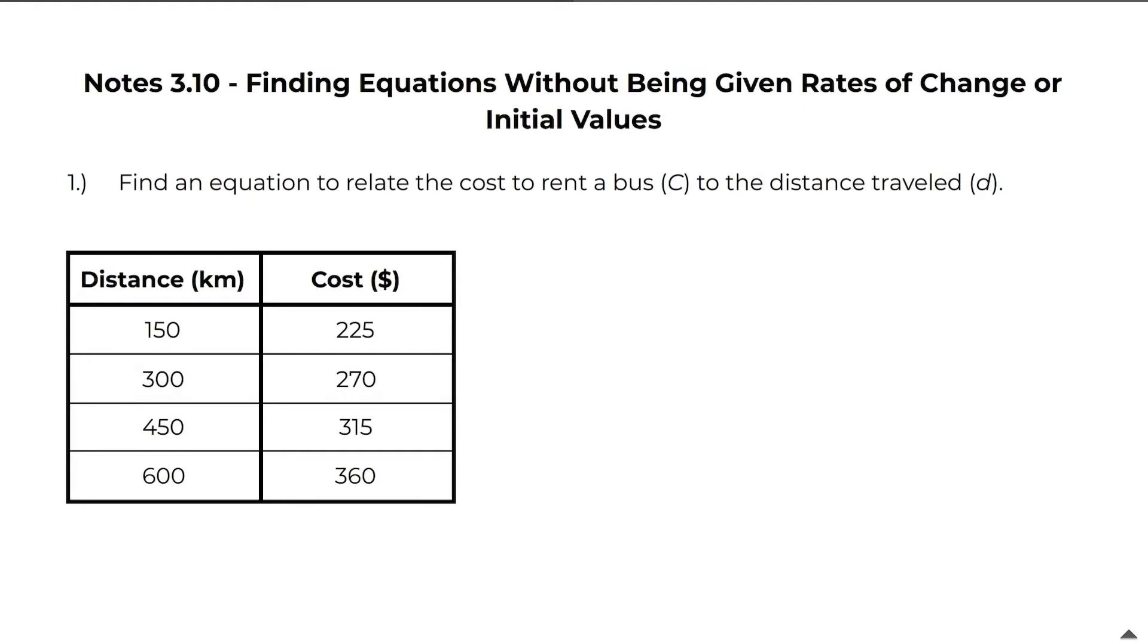If you take a look at question number one, it says find an equation to relate the cost to rent a bus C to the distance traveled which is D. So the first thing I need to do is find my rate of change. To find my rate of change I need to do the rise over the run and I can choose any two points to do this. I'm going to choose the first two that I see here.